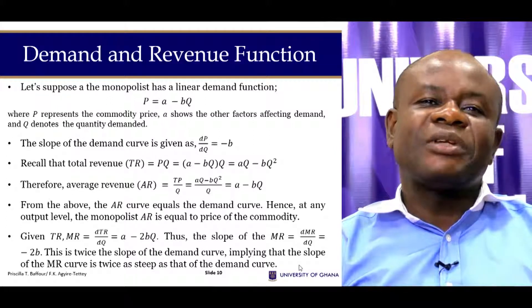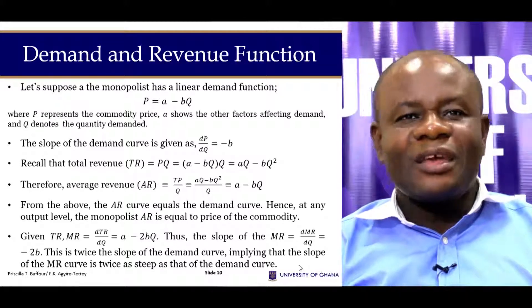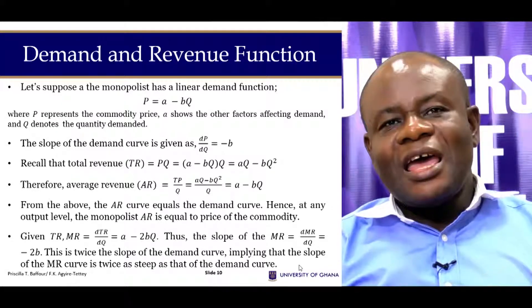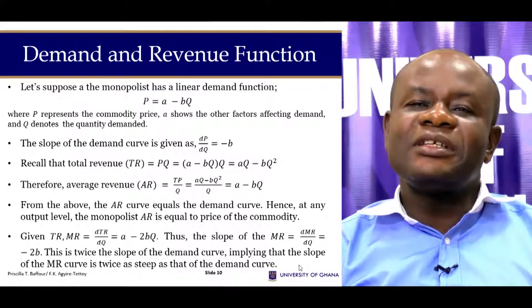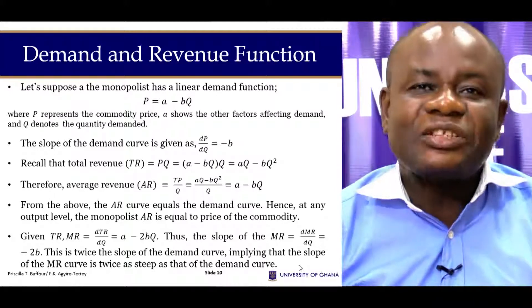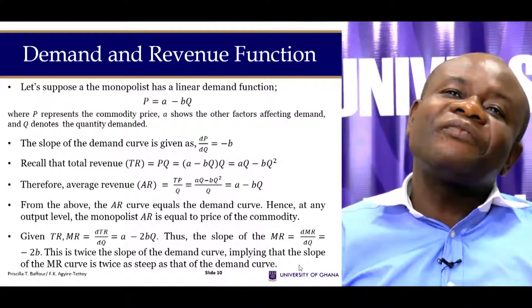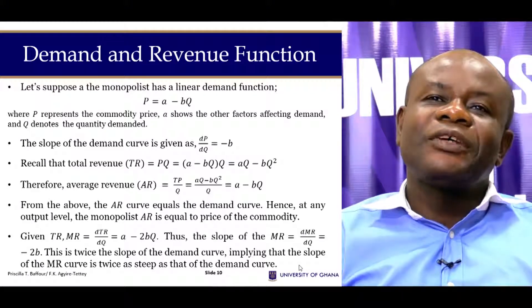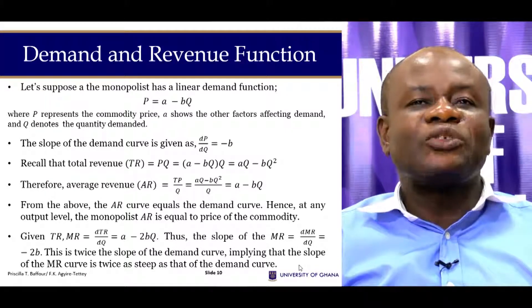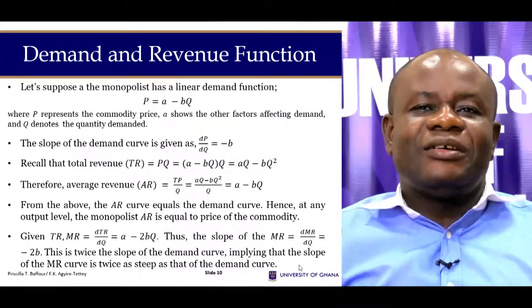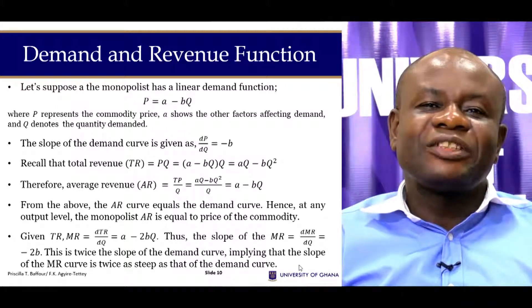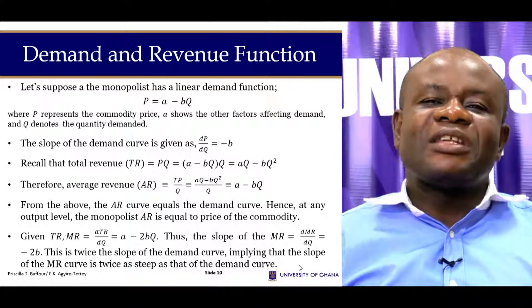Marginal revenue is the derivative of total revenue with respect to output. Since TR = AQ − BQ², differentiating gives MR = A − 2BQ. The slope of the demand function is −B, while the slope of the marginal revenue function is −2B, meaning the MR curve is twice as steep as the demand curve and lies below it. This means the MR curve bisects the horizontal distance between the origin and where the demand curve meets the horizontal axis.